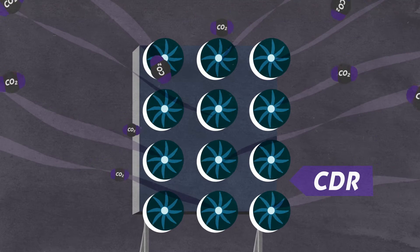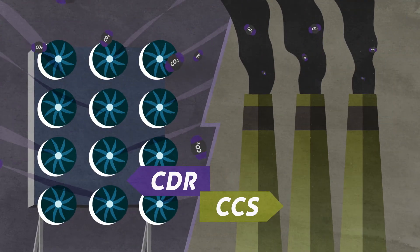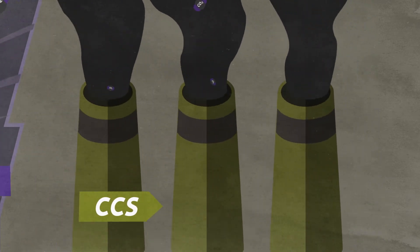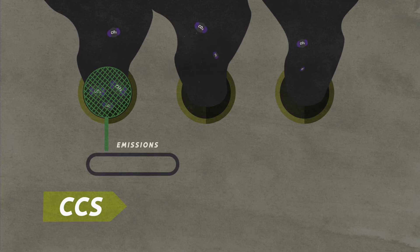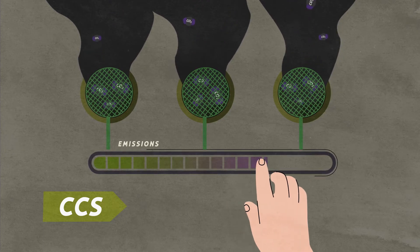But while CDR removes carbon from the atmosphere, CCS most often just captures some of the carbon coming out of an industrial installation. Most CCS technologies at best avoid part of a company's emissions and, at worst, increase them.